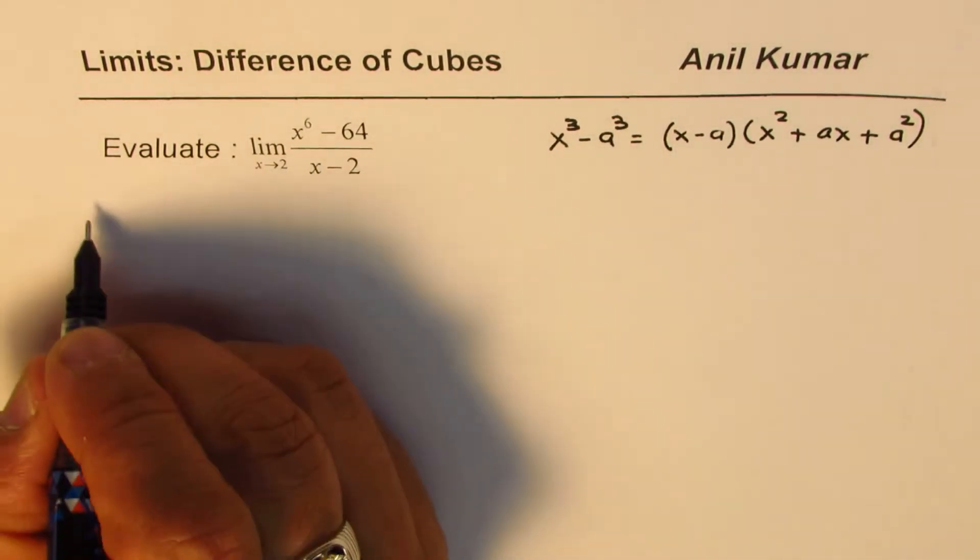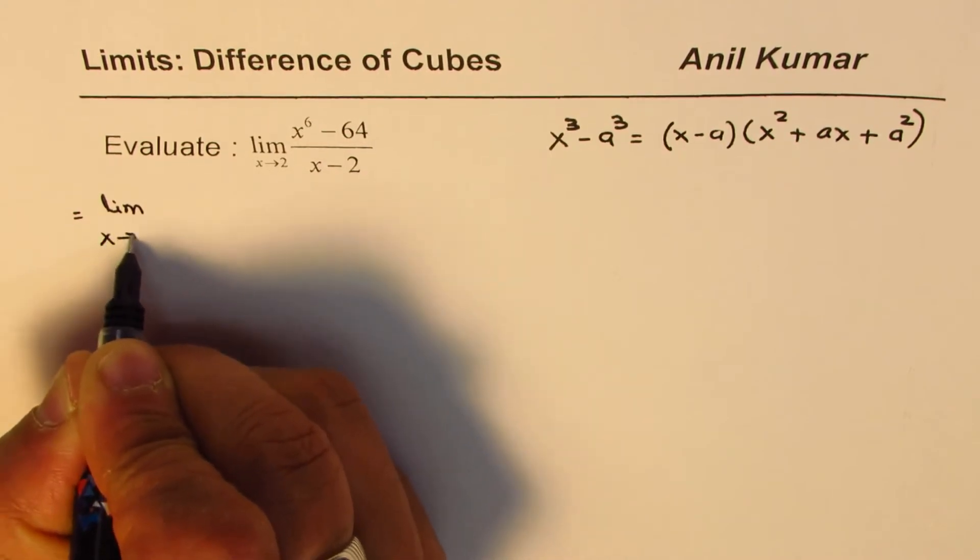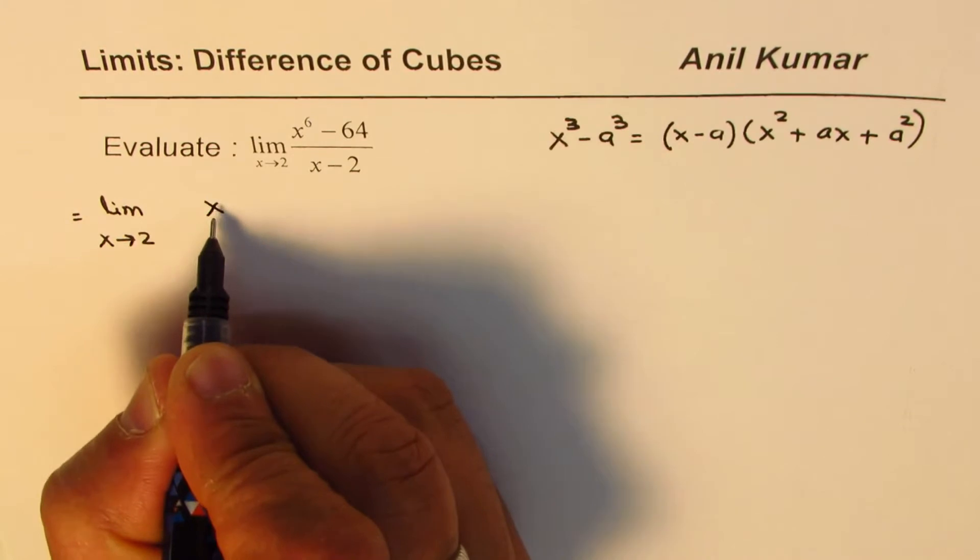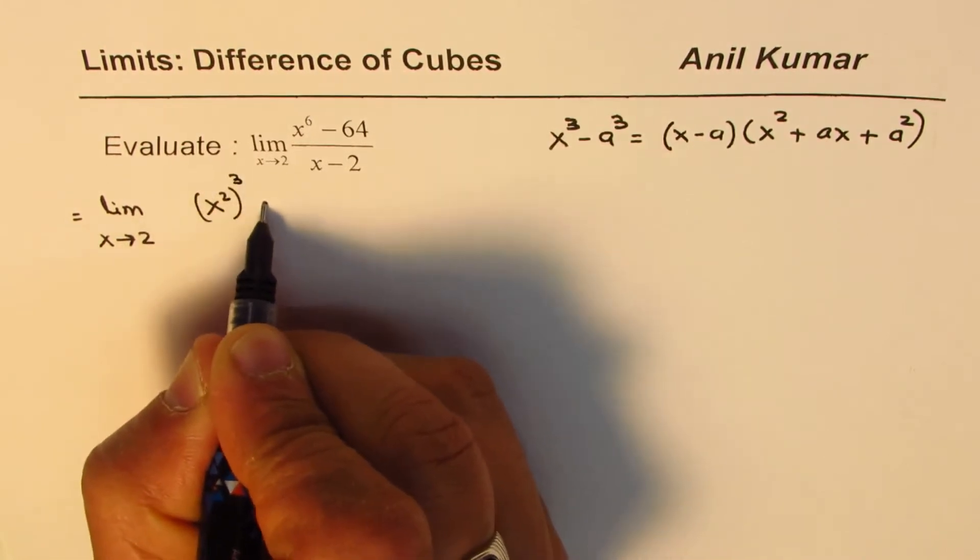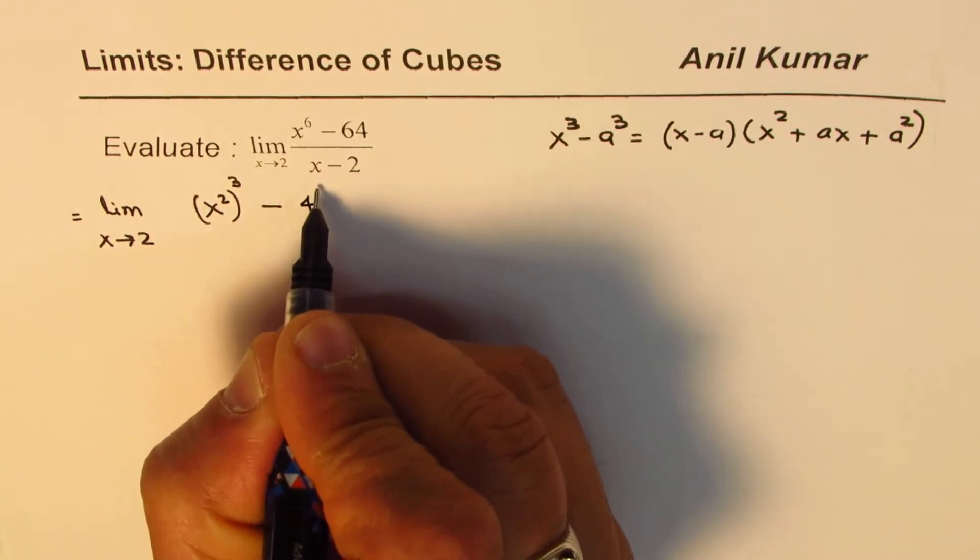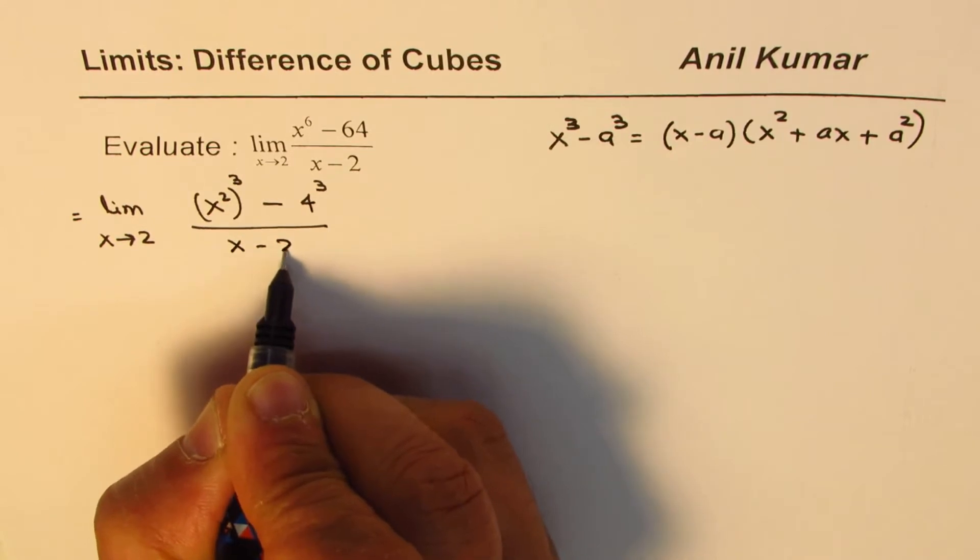Now let's rewrite the given question. We have limit x approaches 2. x to the power of 6 could be written cube of x square. And 64 can be written cube of 4. Let's write this as 4 cube divided by x minus 2.